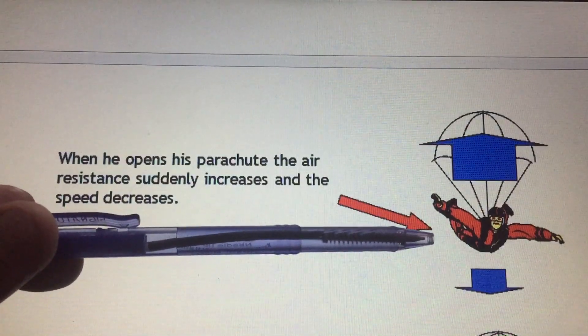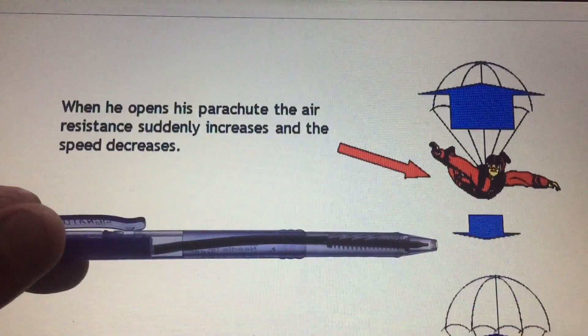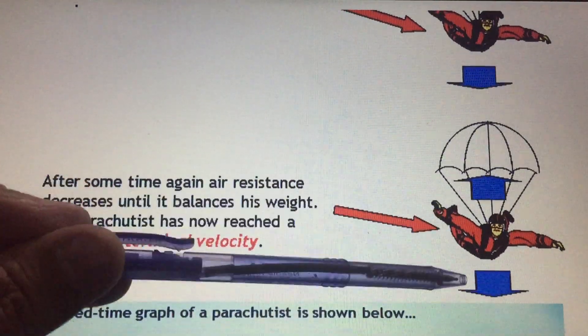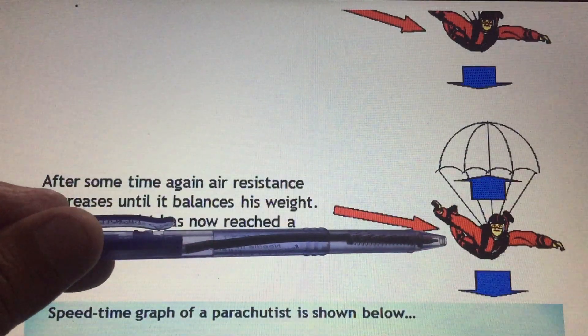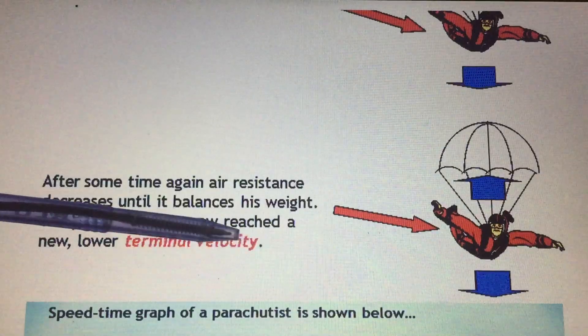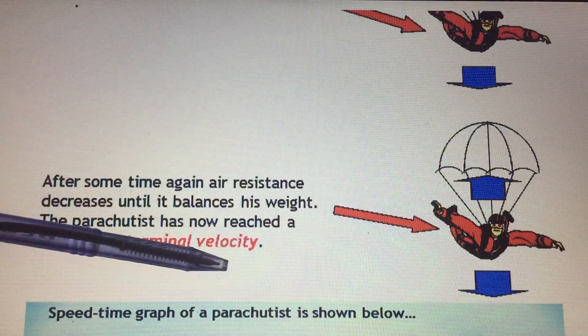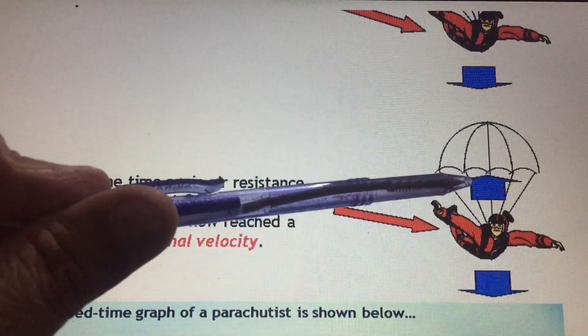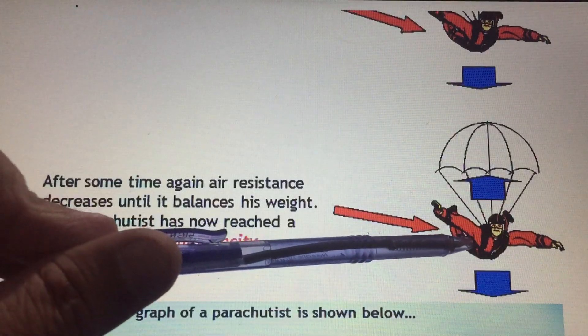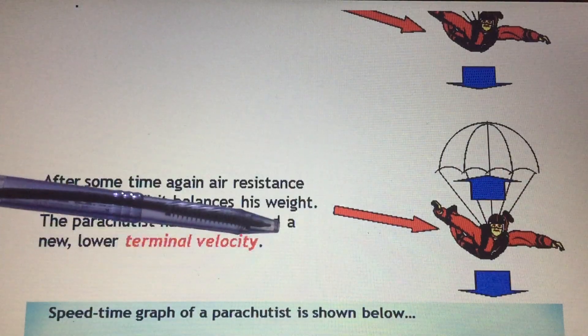As they move upward, weight continuously acts on them, so both forces become equal again. This second terminal velocity will be much lower. Without the parachute, terminal velocity was very high, but with the parachute it will be very low.